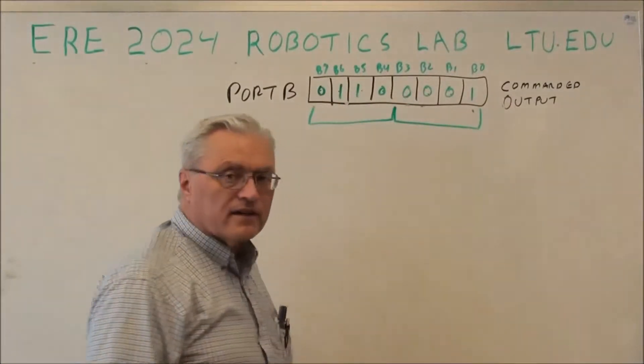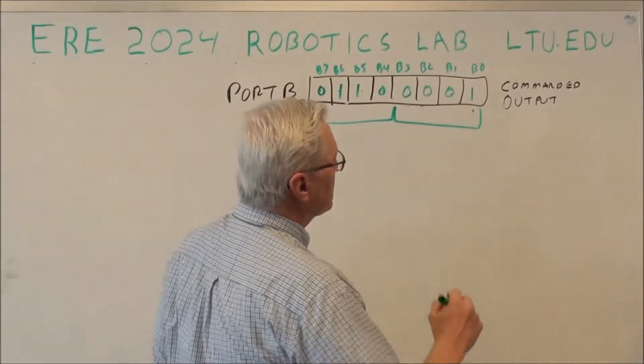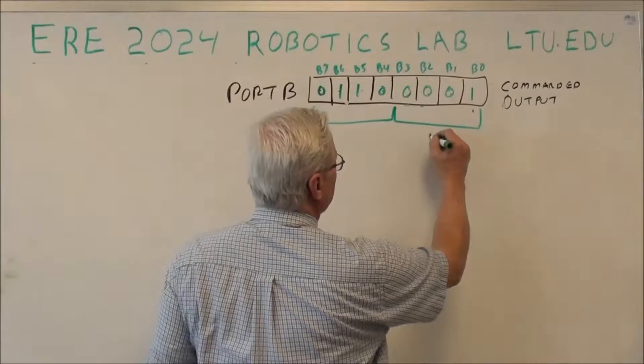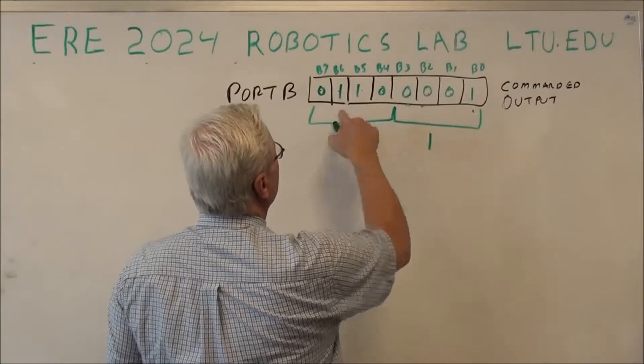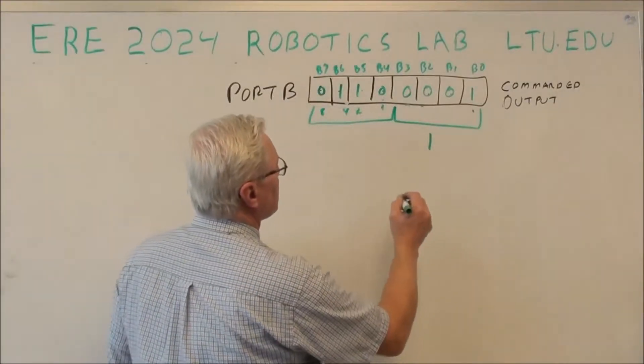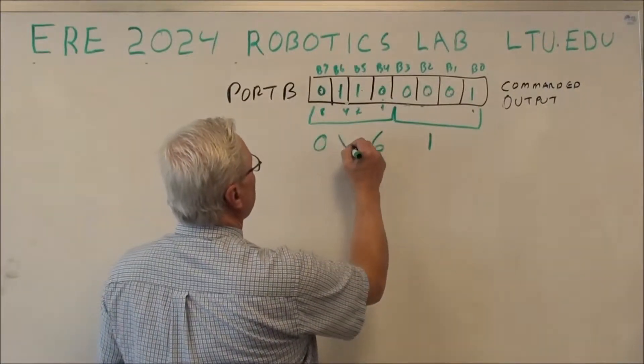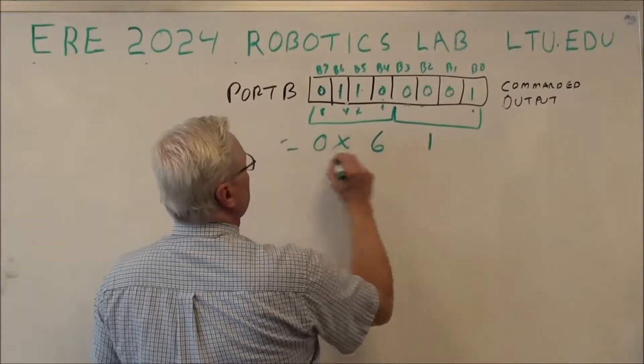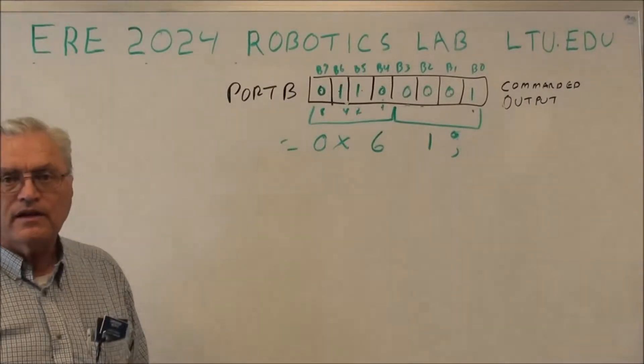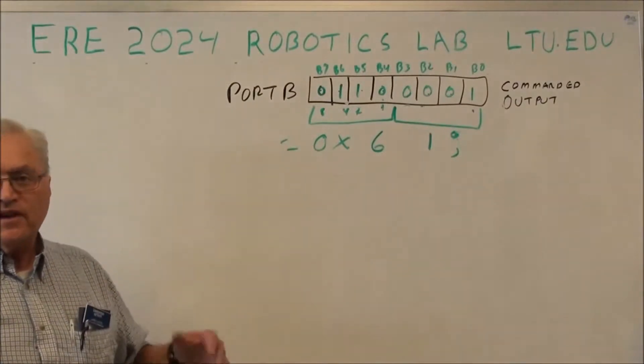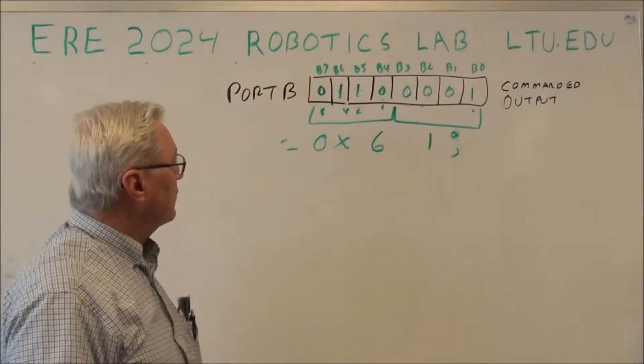So if we looked at that as two four-bit chunks, we could say that these four bits over here equal to one, so that's equal to one. And these four bits, we have one, two, four, and four plus two is six, so that's equal to six one in hexadecimal, and we would normally write that 0x61.